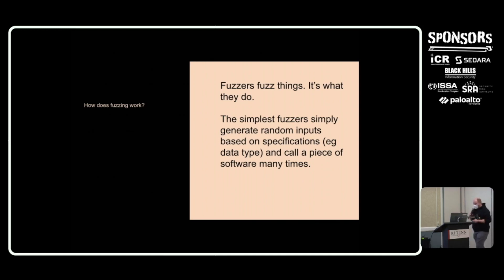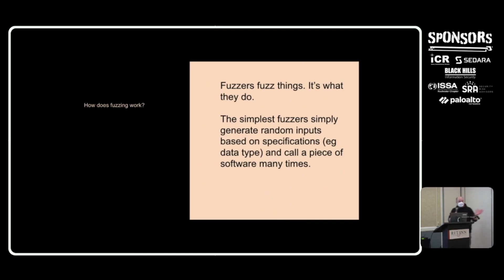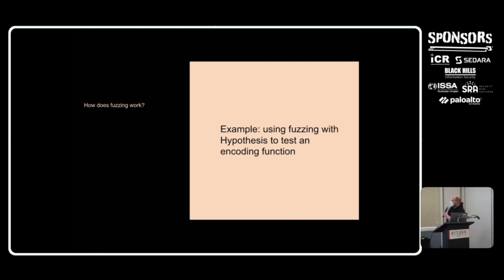The simplest fuzzers just generate random input — just an alphanumeric string or something like this. These have been called 'dumb fuzzers' or simple fuzzers. You just generate random inputs and then call a piece of software with these. I'm a Python person, so I get to use Python here.